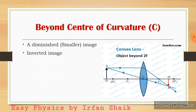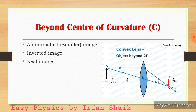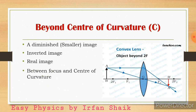The image is inverted. It is a real image — because two light rays, one passing parallel to the principal axis and another moving through the optic center, intersect at a point where the image is formed. That is why this image is called a real image. The image is formed between the focus and center of curvature.